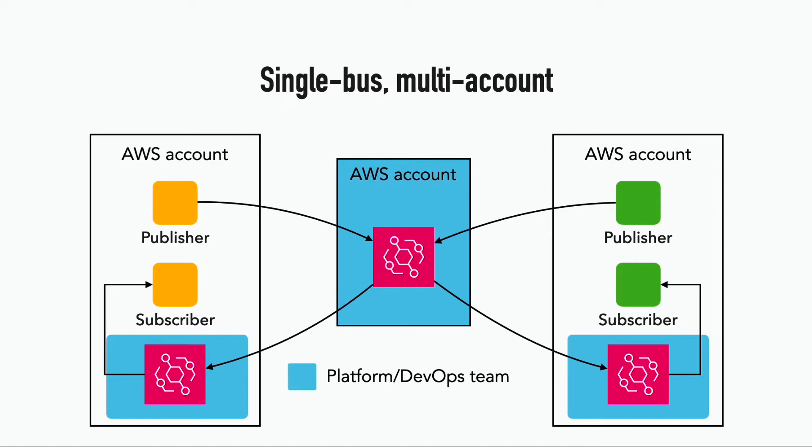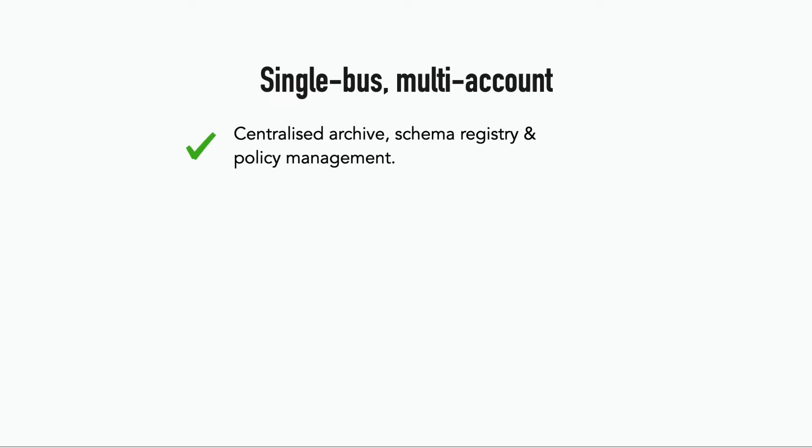That's the single-bus multi-account pattern. The nice thing about having a centralized event bus is that you have one source of truth for all of your events, which also gives you a central archive of all events in the system and a centralized schema registry as well — all in one place to manage policies, which is great from a governance point of view. For subscribers, it's great to be able to find and subscribe to any event in one place, making life a lot easier when you need to develop a new feature and subscribe to a new event from a different service against the same event bus.